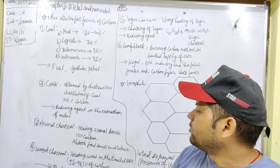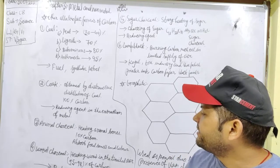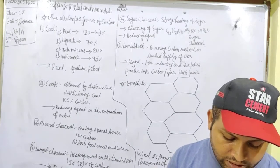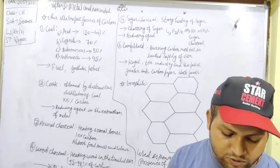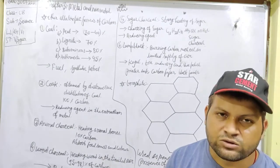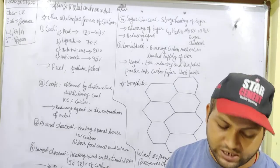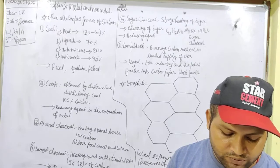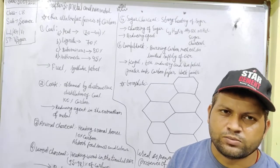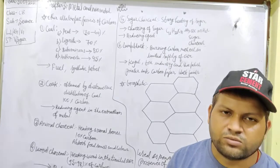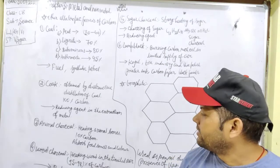Now, animal charcoal. It is obtained from the heating of animal bones in the limited supply of air. It has only 10% of carbon and the rest is calcium phosphate. It is absorbed with foul smells, it is used to absorb foul smells and color to remove from the solutions.